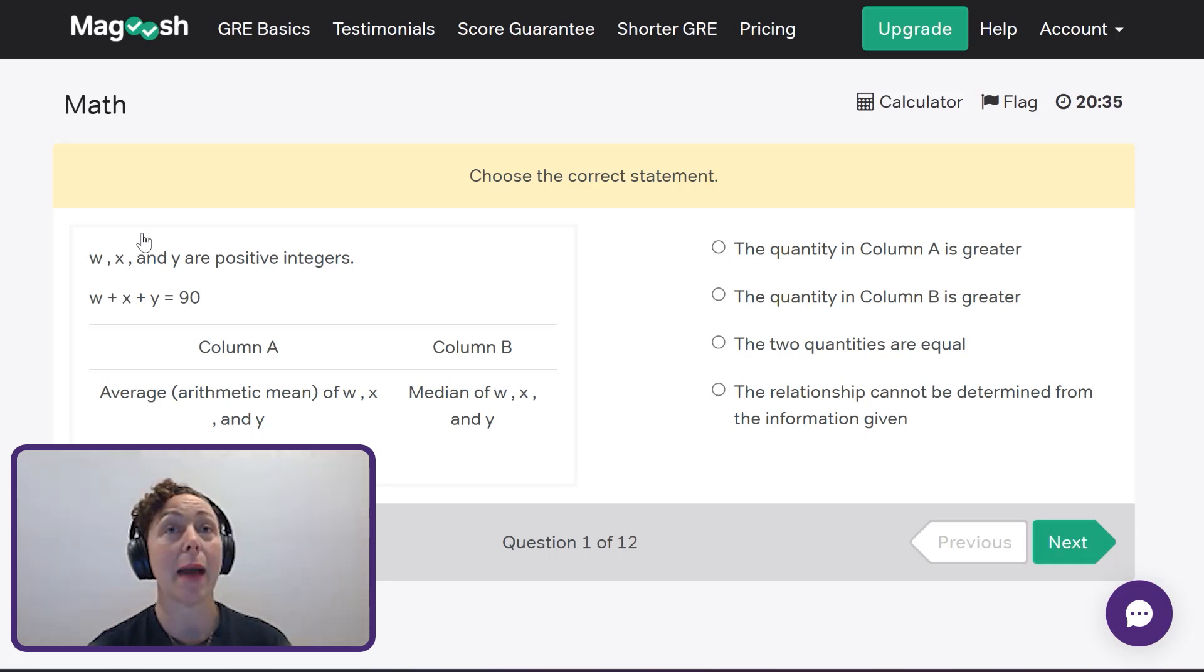In column A, the average arithmetic mean of w, x, and y. And in column B, the median of w, x, and y. So here's the nice thing about this question. Already, I've got a lot to work with. So I've been given the total, 90. So I know that the sum of w, x plus y is 90. And I also know how to determine the average because I determine the average by dividing the total by the number of things. The number of things here is three. The total is 90. So that's going to give me an average of 30, which means I already know column A is 30.